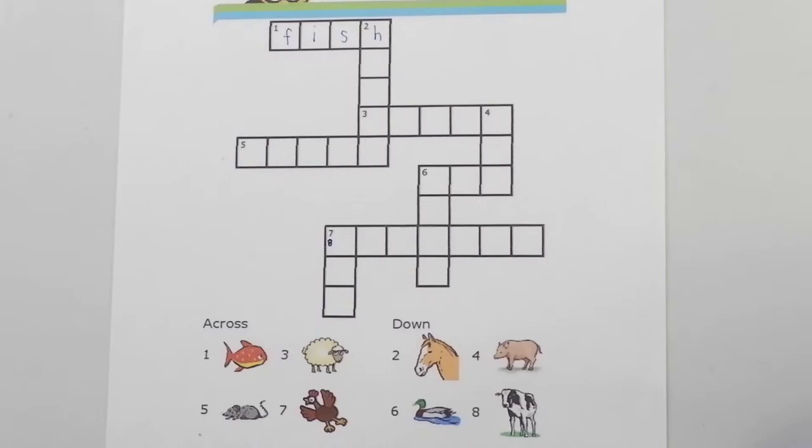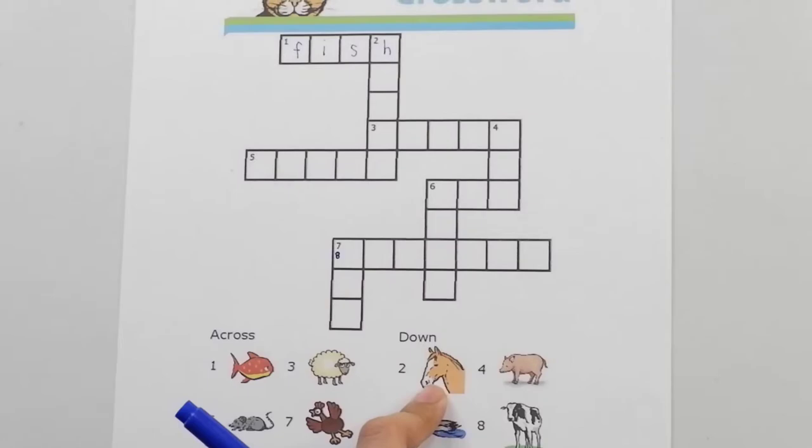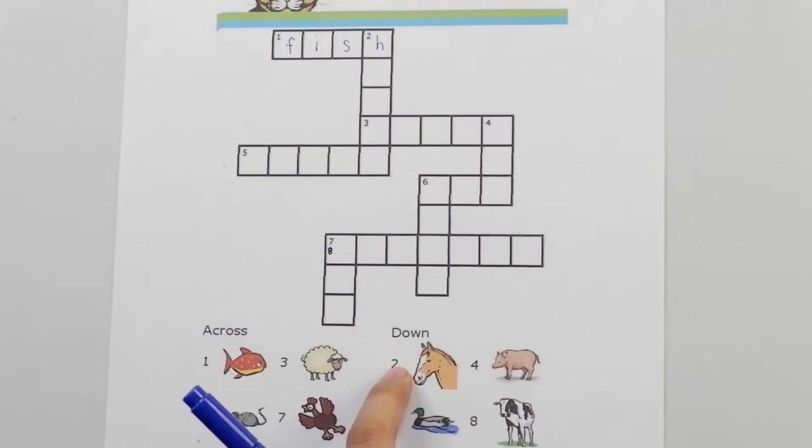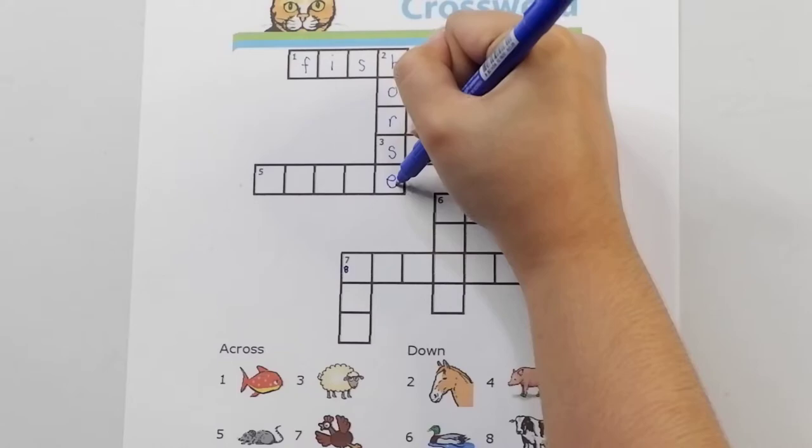Now, let's go to number two. Number two is under down. This means the answer should be written vertically going down. Now, let's go to box number two. We have H-O-R-S-E.